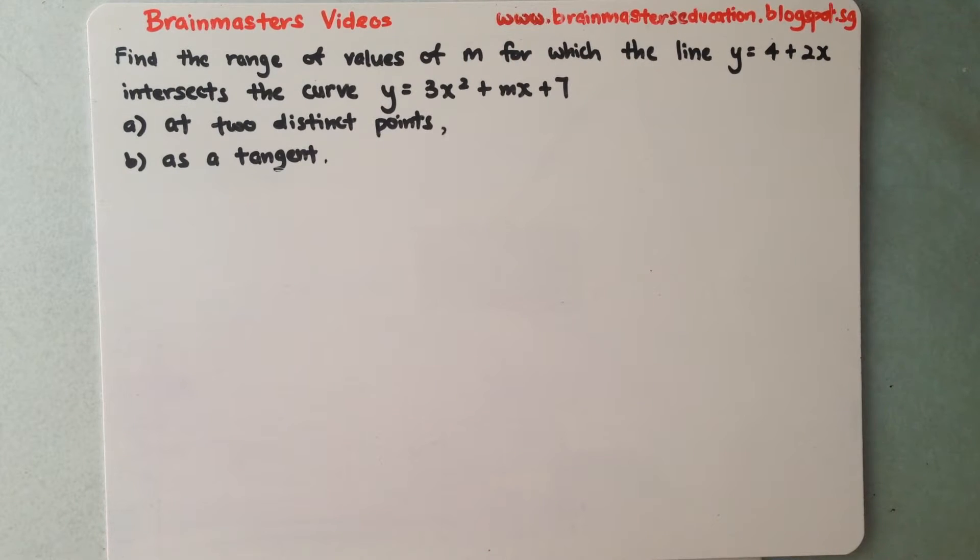Find the range of values of m for which the line y = 4 + 2x intersects the curve y = 3x² + mx + 7. Part a: at two distinct points, and part b: as a tangent.